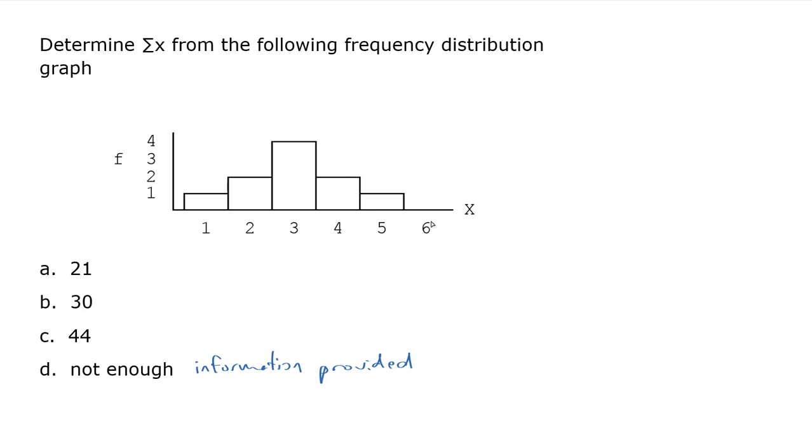Okay, so what we don't have here is the actual frequency distribution table, but we can easily reconstruct it. We know what all the categories are here of x: 1, 2, 3, 4, 5, and 6.